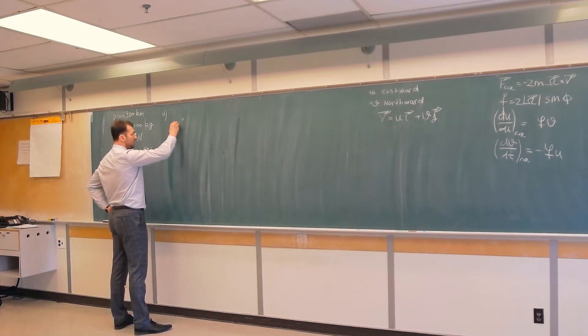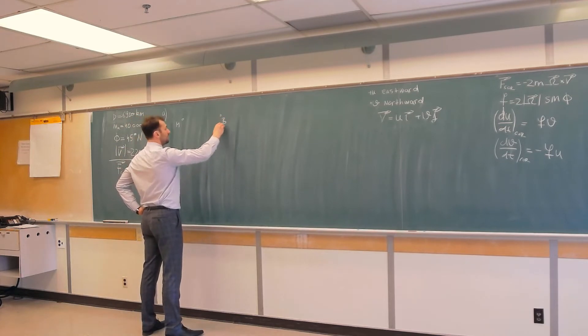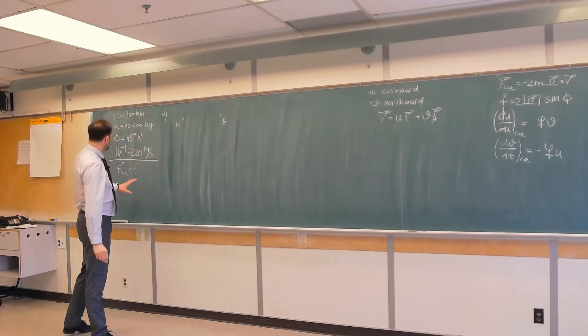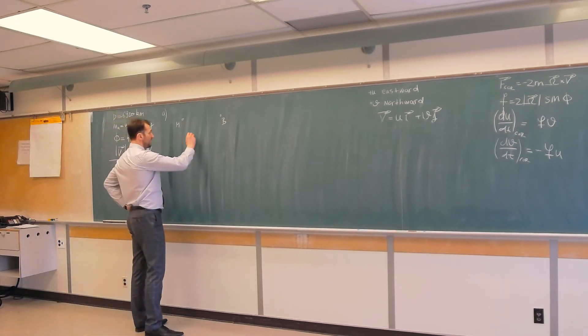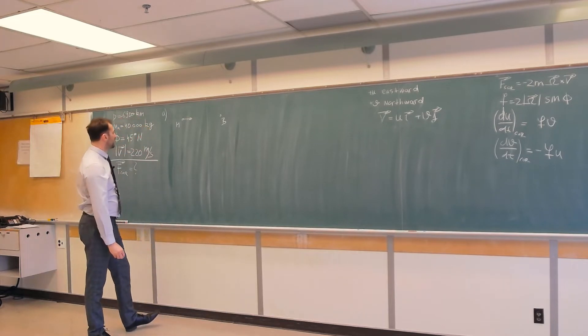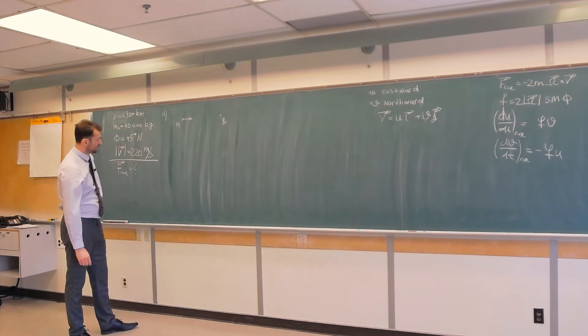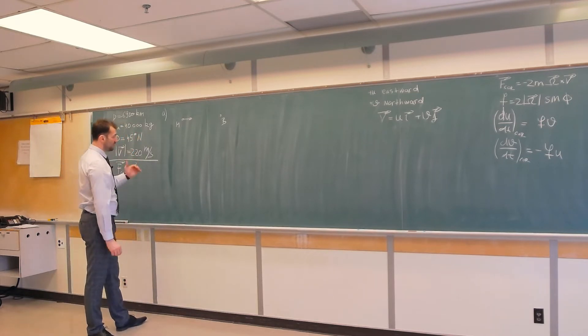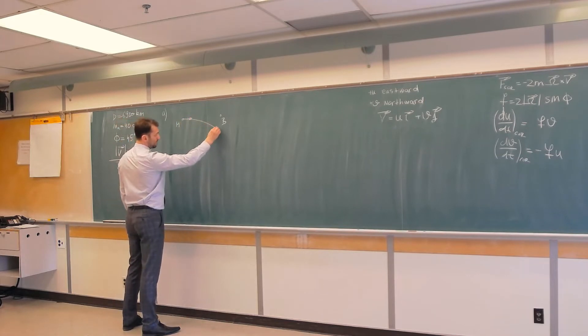So here we have Montreal and somewhere here is Belgrade. Both cities are at the same latitude of 45 degrees, and the aircraft is traveling from Montreal to Belgrade. Clearly, there will be Coriolis force. This is northern hemisphere, so deflection is to the right, like so.